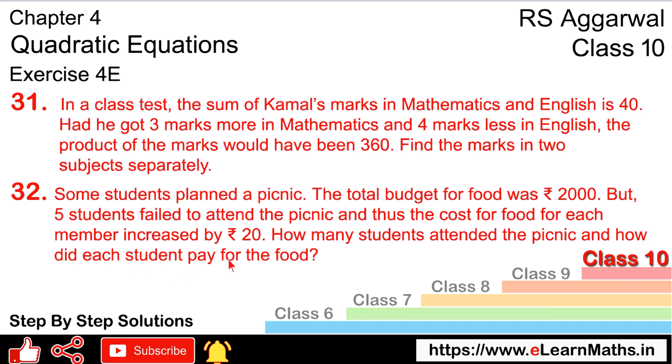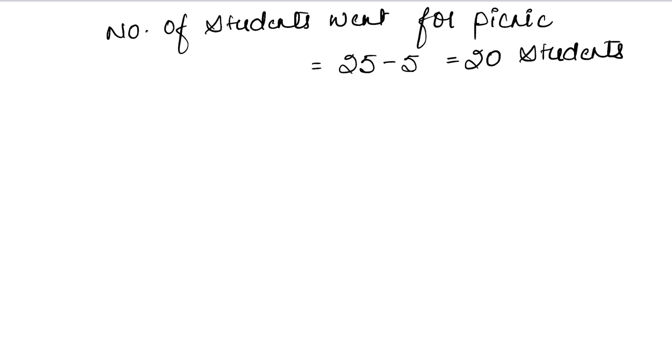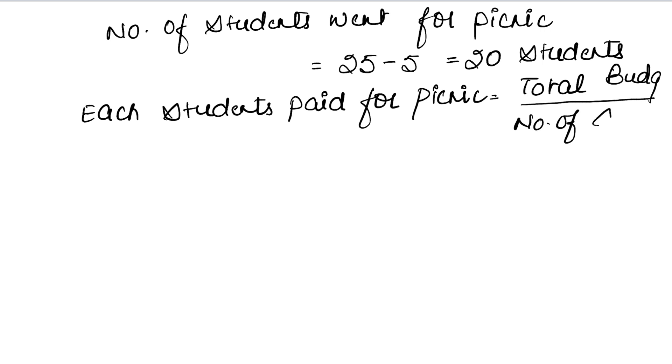How much did each student pay for the food? 2000 rupees total divided by 20 students equals 100 rupees. So each student paid 100 rupees for the picnic.